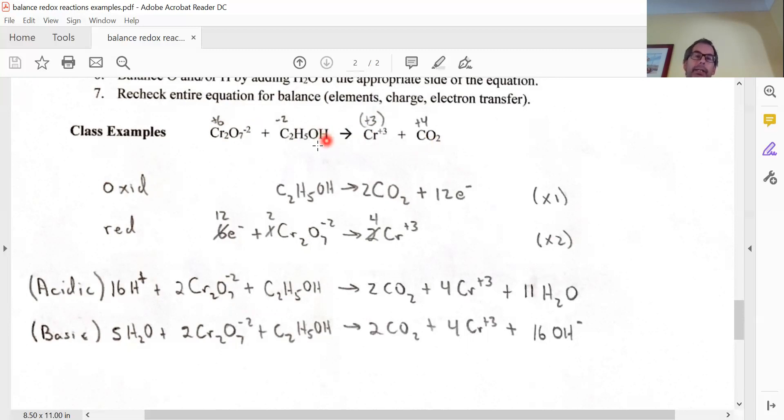In this case, hydrogens are all plus one, so there's six of them, and six would be plus six, but there's an oxygen there. Take away two, so it's going to be plus four.